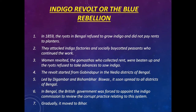Indigo Revolt or the Blue Rebellion: In 1859, the ryots in Bengal refused to grow indigo and did not pay rents to planters. They attacked indigo factories and socially boycotted peasants who continued the work. Women revolted. The Gumasthas who collected rent were beaten up, and the ryots refused to make advances to sow indigo. The revolt started from Gobindpur in the Nadia district of Bengal, led by Digambar and Bisambar Vishwas, and it soon spread to all districts of Bengal. The British government was forced to appoint the Indigo Commission to review corrupt practices relating to this system. Gradually, it moved to Bihar.